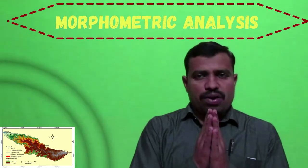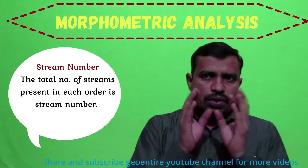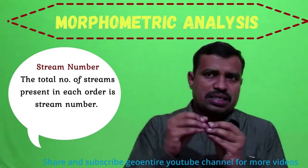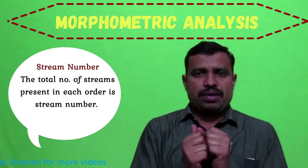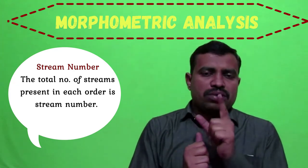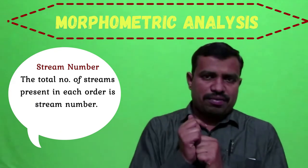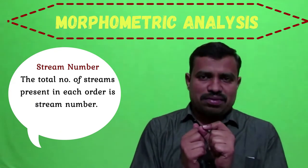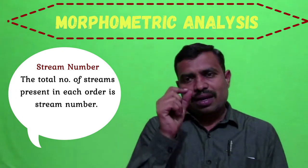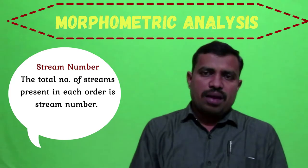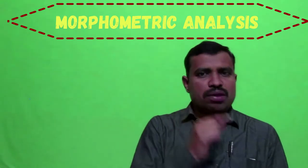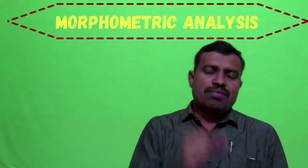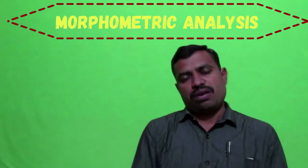Stream number is the total number of streams present in each order. It is found that as the stream order increases, the stream number decreases. In the Kayadur river basin example, there are 3,818 first-order streams, 990 second-order, 233 third-order, 59 fourth-order, 12 fifth-order, 2 sixth-order, and 1 seventh-order stream — making the entire basin seventh order.